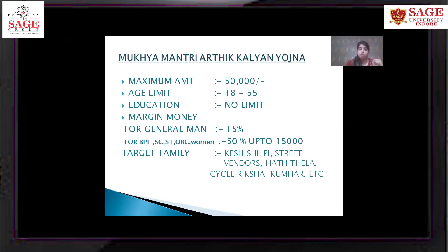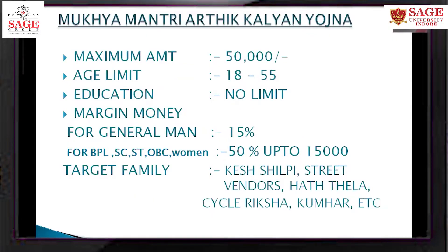The margin money refers to the subsidy provided. For the general category, it is about 15%. For example, if someone applies for a 50,000 loan, they receive a 15% subsidy. For BPL, ST, OBC, or similar categories, the subsidy goes up to 50% — so on a 30,000 loan, they may have only 15,000 to repay. The loan limit is up to 50,000.